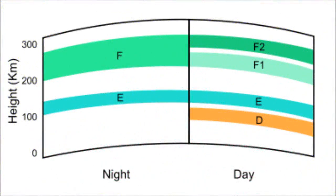At night, the D-layer disappears and the E-layer becomes very weak, since it can't stay ionized very long. Also, F1 and F2 combine to create a single layer. Low frequencies are now useful, since the D-layer is no longer there to absorb them. This is why you hear AM radio stations from all over the country at night. The same higher frequencies that are useful during the day may pass right through these less strong night-side F-regions.